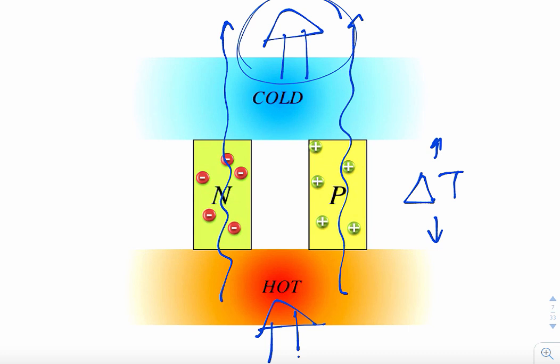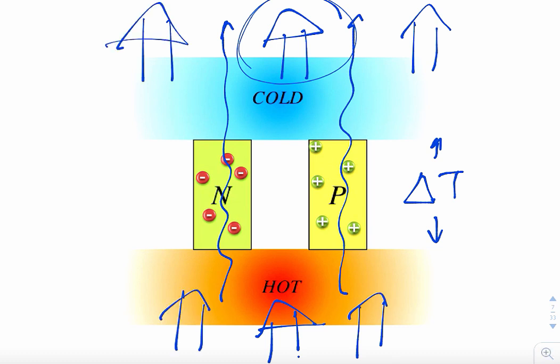This thermal equilibrium will happen if I cannot reject the heat effectively from the top side. If I dump heat from the bottom continuously and can't reject the heat from the top, eventually the top plate will get hot and the delta T will disappear. In order to have a delta T, I must make sure my path is open for heat rejection, so heat can continuously flow from the top plate to the ambient. Let's assume that this is the case, so I do have a delta T.